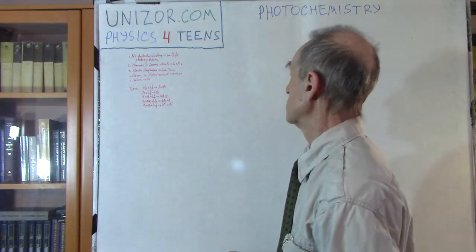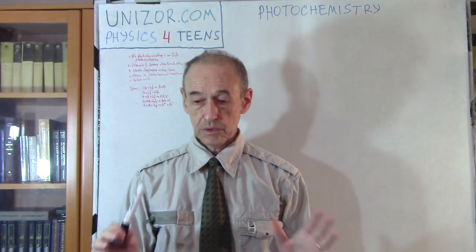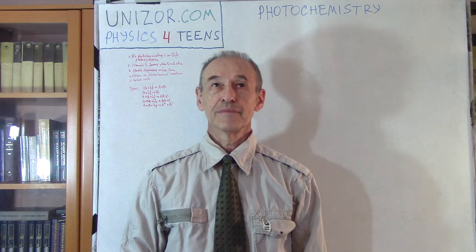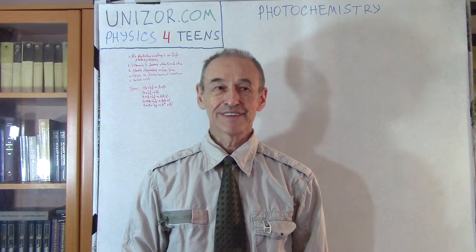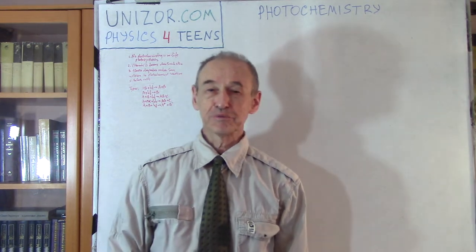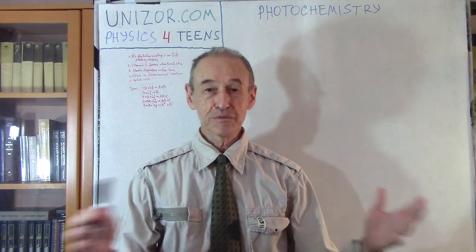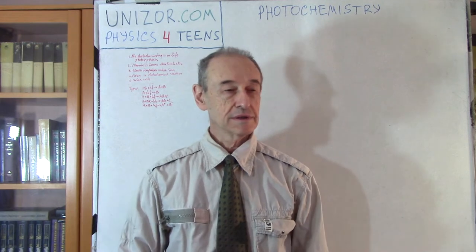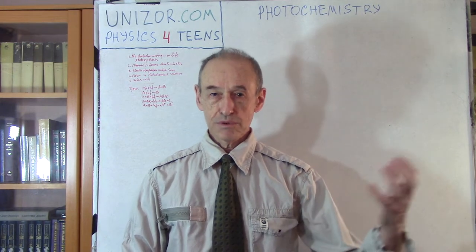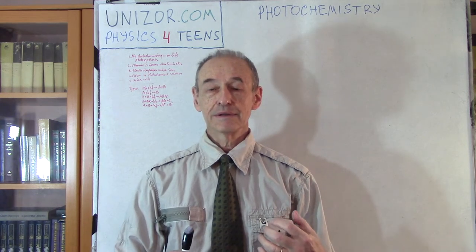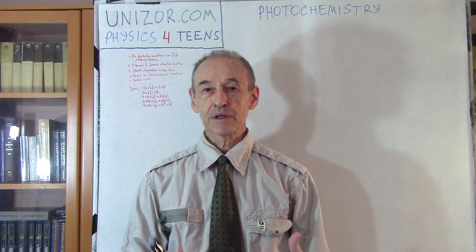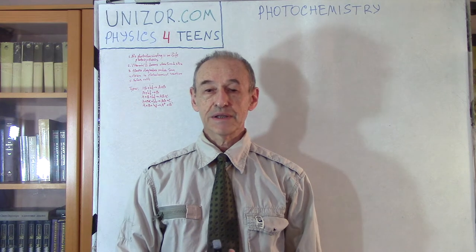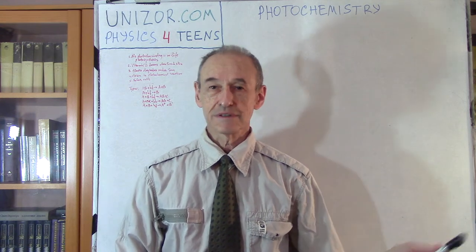Now let's talk about photochemistry. First of all, we are talking about light and how light affects chemical reactions. Let me start with a very dramatic statement: if not for photochemistry, there would be no life on earth. Everything which grows around us — all these trees, grass, and whatever we have — they absorb light and it actually affects the chemical reactions inside. It's called photosynthesis. That's how molecules are built, that's how trees are growing, that's how everything grows.